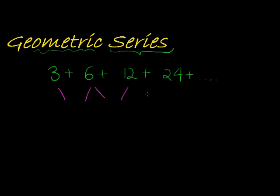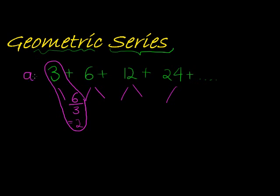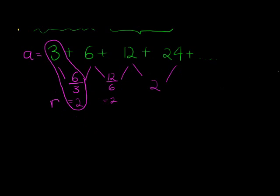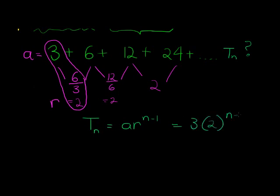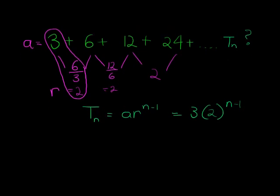A geometric sequence has a constant ratio. Here, 6 divided by 3 equals 2, so our first term is A and our constant ratio is R equals 2. It's constant because 12 divided by 6 is also 2, and 24 divided by 12 is 2 as well. The general term T_N is A times R to the power of N minus 1, which for this example is 3 times 2 to the power of N minus 1.